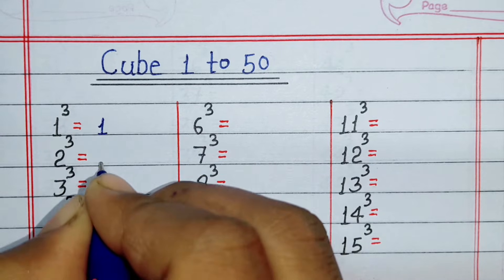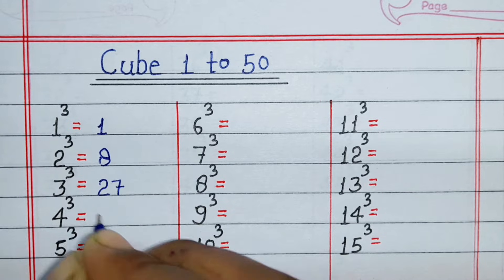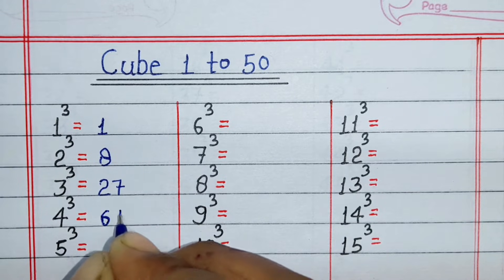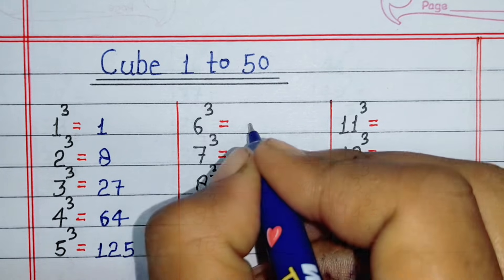Cube of 1 is 1, cube of 2 is 8, cube of 3 is 27, cube of 4 is 64, cube of 5 is 125.